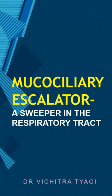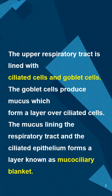Mucociliary escalator — a sweeper in the respiratory tract. The upper respiratory tract is lined with ciliated cells and goblet cells. The goblet cells produce mucous which forms a layer over the ciliated cells. The mucous lining the respiratory tract and the ciliated epithelium forms a layer known as the mucociliary blanket.